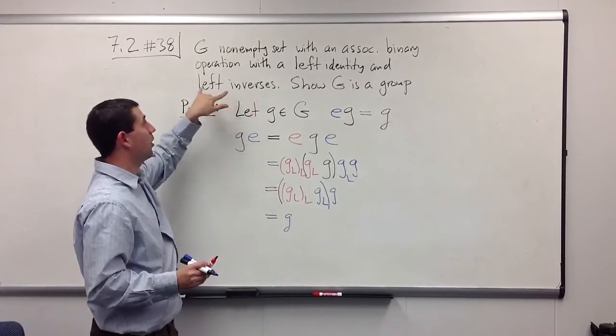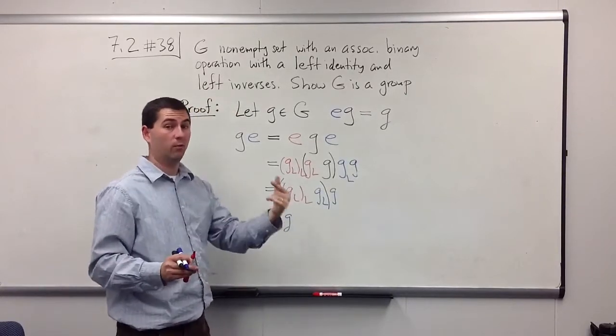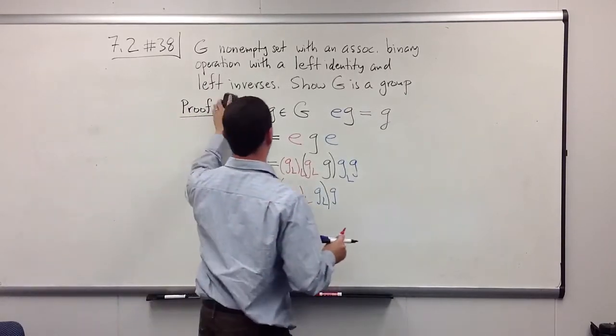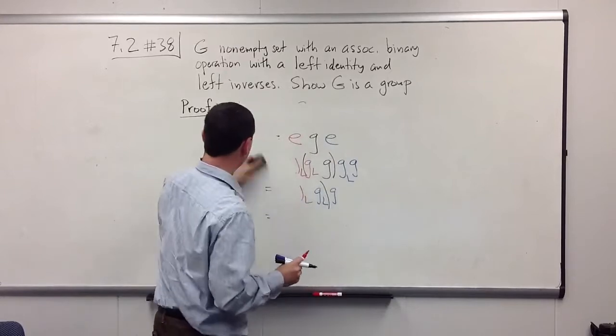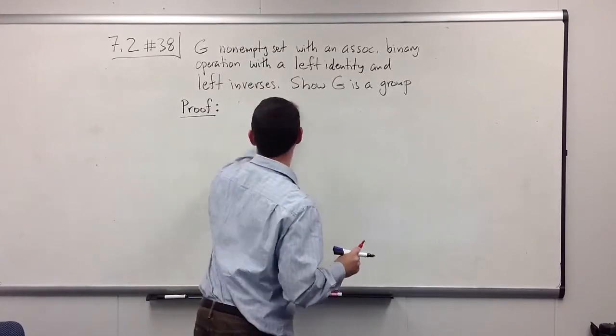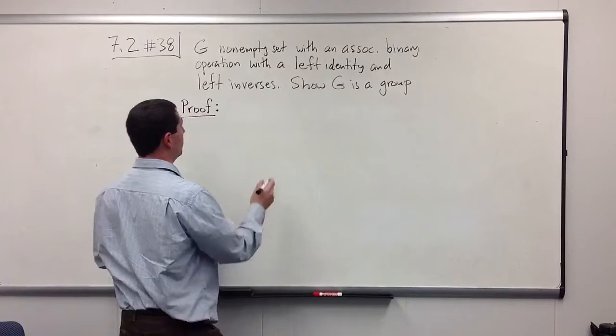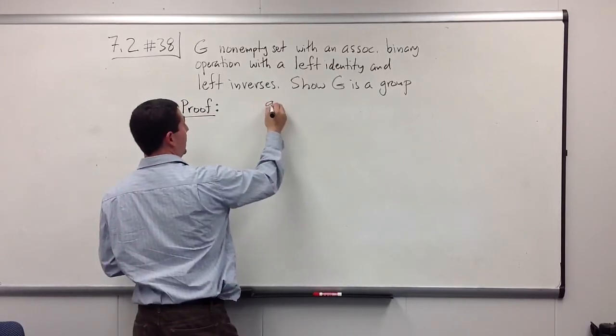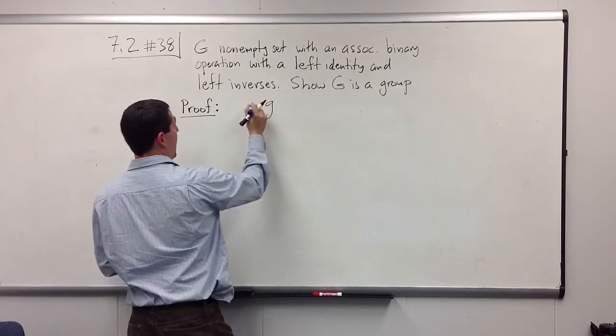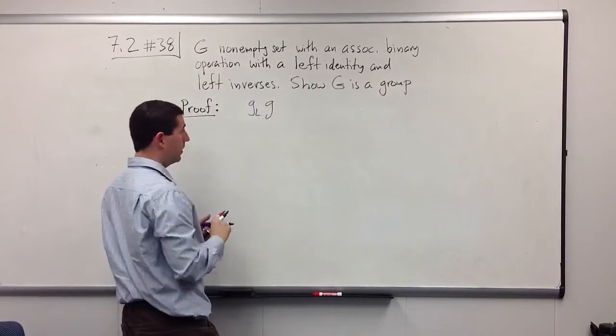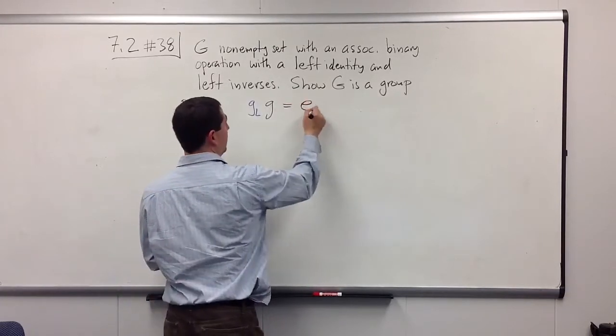Okay, so the next step is to show that our left inverses are always right inverses. So we know, for instance, that if we multiply g with a g_l on the left, no problem. We get the identity element.